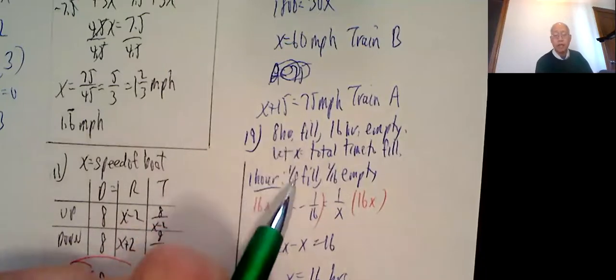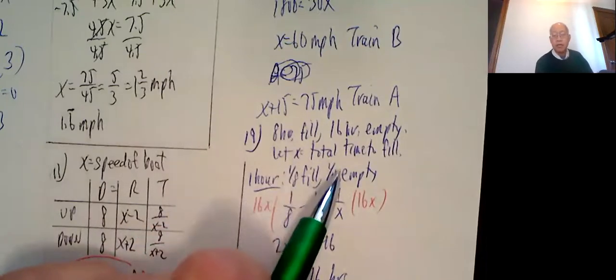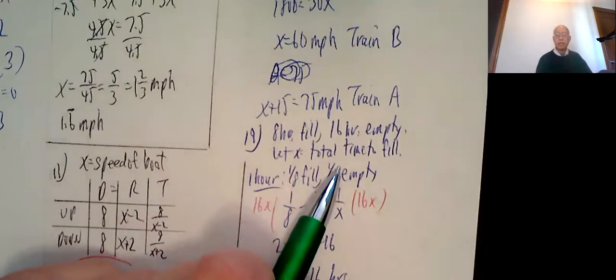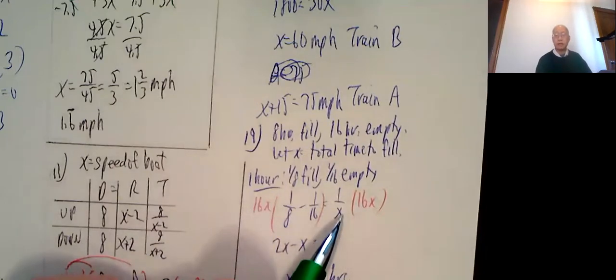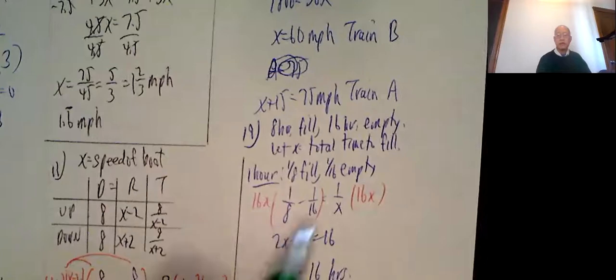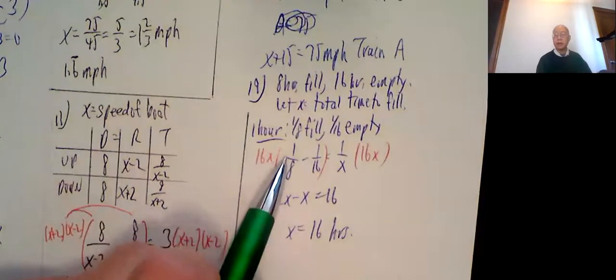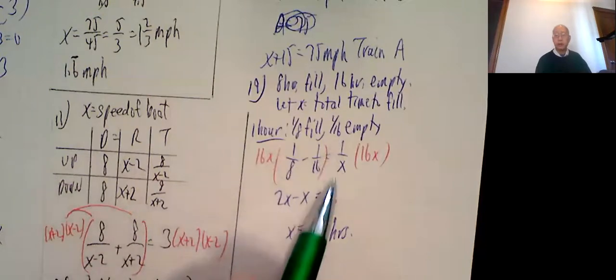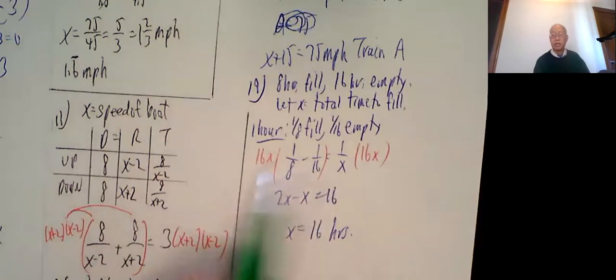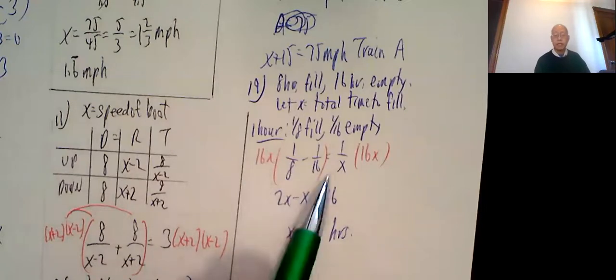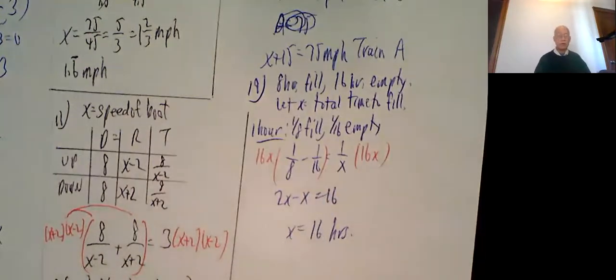In one hour, one-eighth of the tank would fill, but one-sixteenth would empty. By the same logic, we would have 1 over x completely filled. So 1 over 8 minus 1 over 16, this is coming in, this is going out, and that's equal to 1 over x. Multiply both sides by 16x to clear out the fractions. 2x minus x is equal to 16, so x is equal to 16 hours. So this is section 8.6.